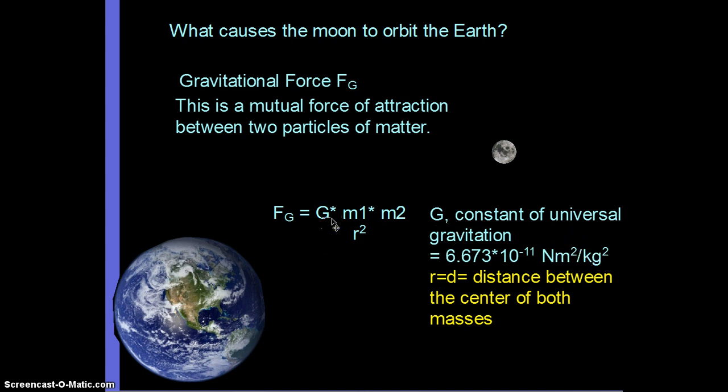And to find gravitational force, capital G times mass 1, so let's say mass of Earth, times mass 2, mass of the moon, divided by the radius between them squared. Now I hate how your book uses R here.